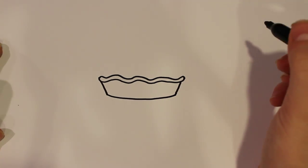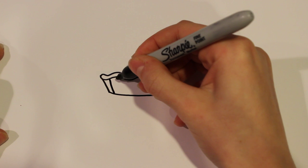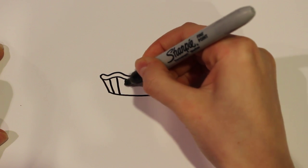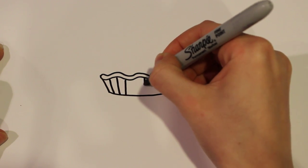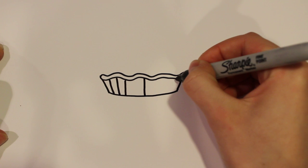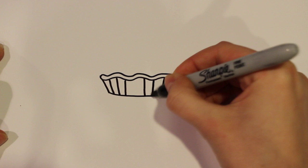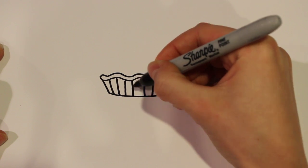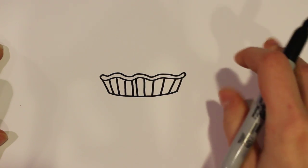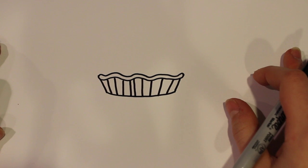And then for some detail we're just going to add some lines that are slanted inward like that so the middle one is straight and then from there they just curve outward. And the same thing on the other side and there you have the pan.